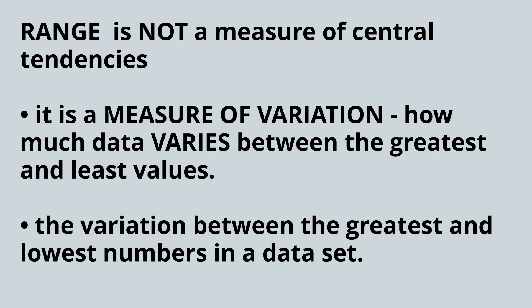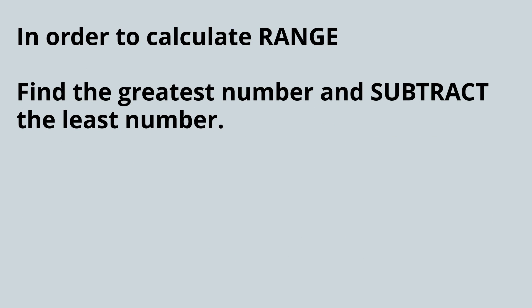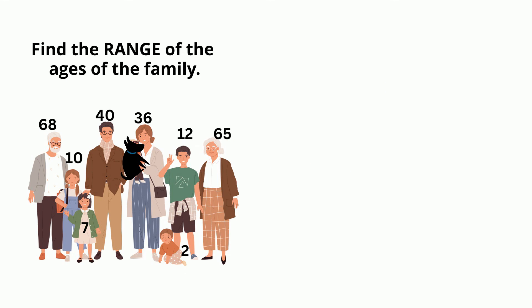And finally, let's figure out the range of this data set. Range is not a measure of central tendency. It's a measure of variation. So how much data varies between the greatest and the least values? The variation between the greatest and the lowest numbers in the data set. Let's find the greatest number and subtract the least number. So here's an example. What's the range of the family? Let's order from least to greatest. So the range is 68 minus 2, and it's 66.